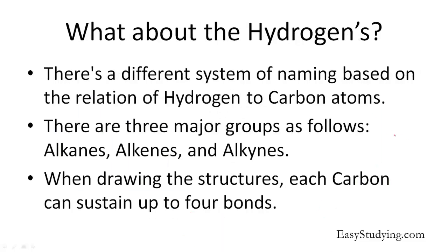What about the hydrogens? There's a different system of naming based on the relation of hydrogen to carbon atoms — basically their proportion to each other. There are three major groups: alkanes, alkenes, and alkynes. When we name these structures, we take the number of carbons, the root name, and then add the suffix based on the proportion in which they appear — either -ane, -ene, or -yne, such as methane, methene, or methyne. I'll show you how these proportions appear later in the video.